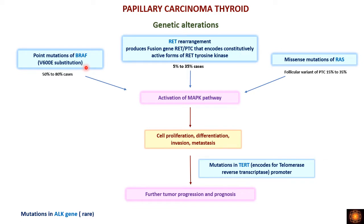The next important alteration is RET rearrangement, which produces a fusion gene — the RET/PTC fusion gene — that encodes for a constitutively active form of RET tyrosine kinase. Because of this constitutively active form, we have continuous activation of the MAP kinase pathway. Another important alteration is a missense mutation of the RAS gene.